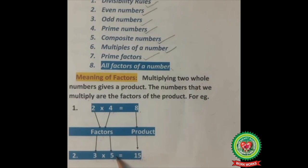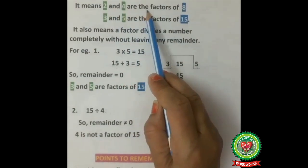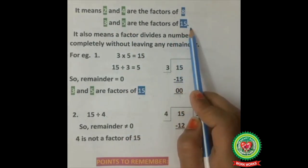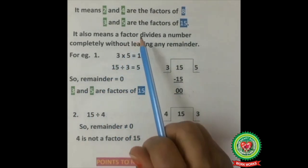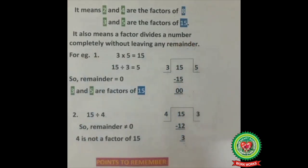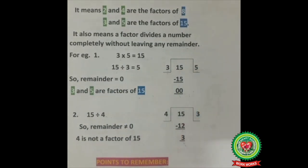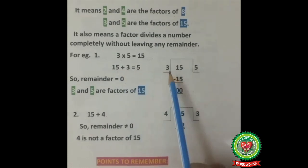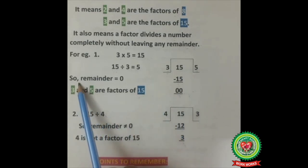So when we multiply two numbers we get a product — it means 2 and 4 are the factors of 8, and 3 and 5 are the factors of 15. It also means a factor divides a number completely without leaving any remainder — the remainder should be 0. For example, 15 divided by 3: 3 times 5 is 15, remainder is 0.